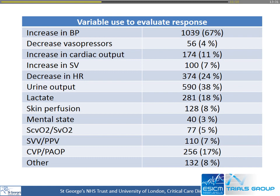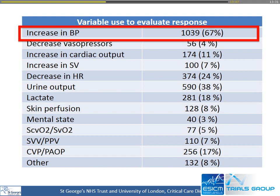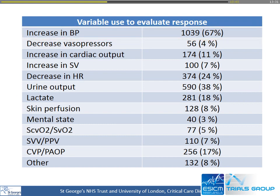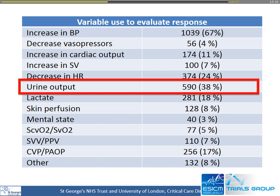What do we use to guide therapy? From FENICE, we found that clinicians are really driven by blood pressure: if there is hypotension, we give fluids; if there is hypotension, we get worried; if there is hypotension, we perform some hemodynamic intervention. And when assessing the response to fluids, again blood pressure is used — in about 70% of fluid challenges. Interestingly, even urine output was used to assess the response to a fluid challenge. This is a complete nonsense.